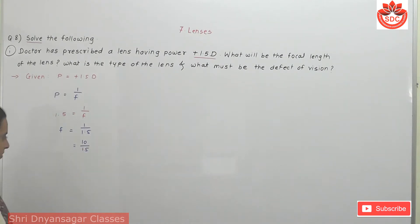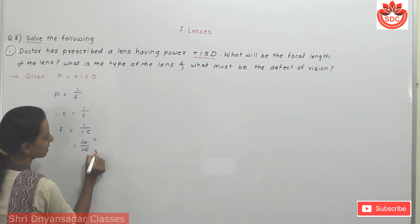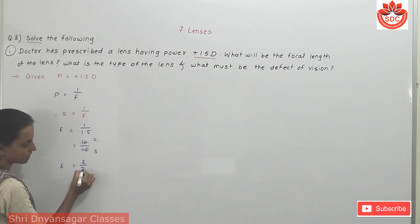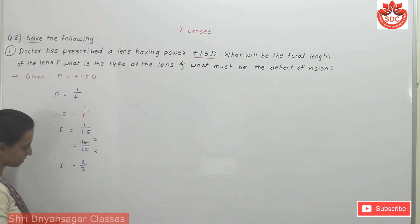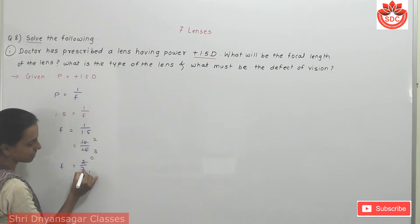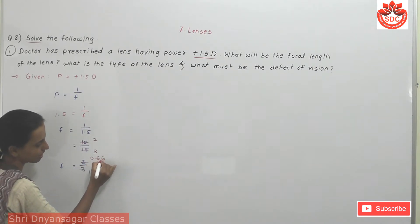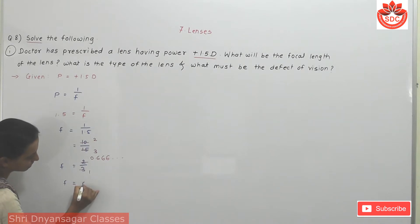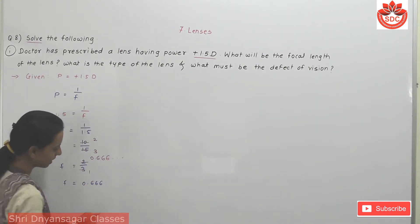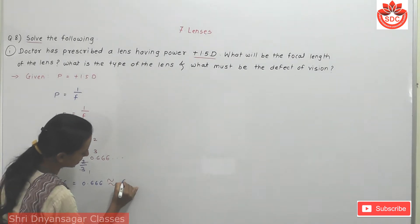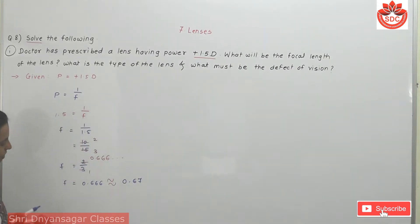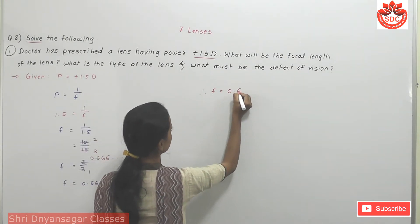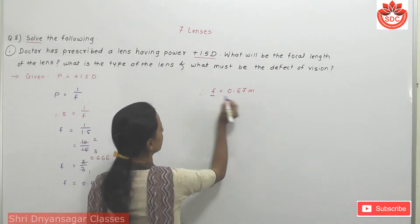Dividing by 5, we get 2 upon 3. Since 2 is less than 3, we divide: 3 ones are 3, giving 0.1; then 6 are 18, with 2 remaining — 6 is recurring. Therefore f is equal to 0.666, approximately 0.67. The focal length of the lens is equal to 0.67 meter.